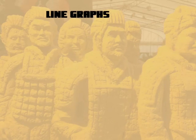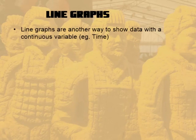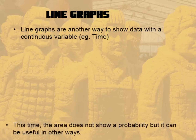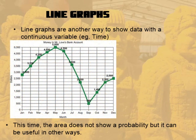Line graphs are another one variable versus another variable, but very often the variable is changing continuously, like time. For example, this shows the change in money in someone's bank account over time. Analyzing line graphs is another important area of statistics.